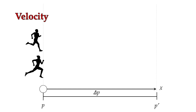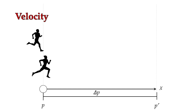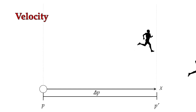The gun goes off, our runners start, and we see that the runner below smoked the runner above. She was much faster than him, which means she had to have a greater velocity. Let's delve deeper into this whole concept of velocity.